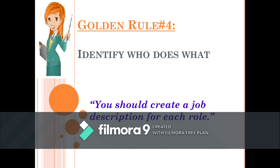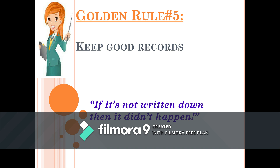Here is our golden rule number five: keep good records. It is an essential part of GMP to keep accurate records. During an audit, it helps convey that you are following procedures, and it also demonstrates that processes are known and under control. Remember this thumb rule of GMP: if it is not written down, then it did not happen.